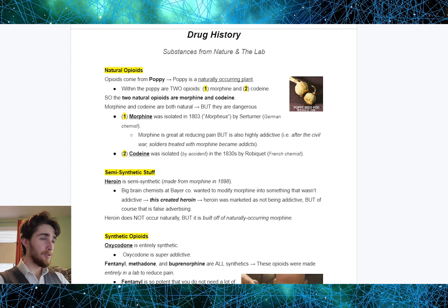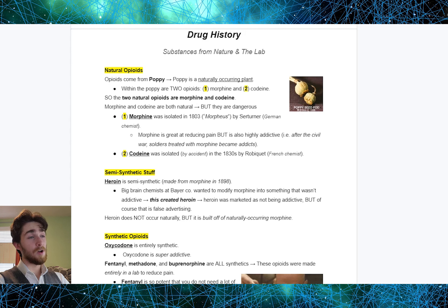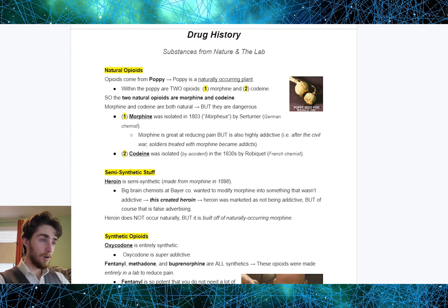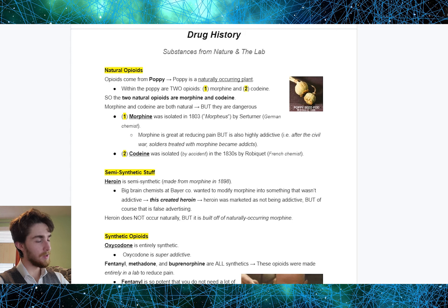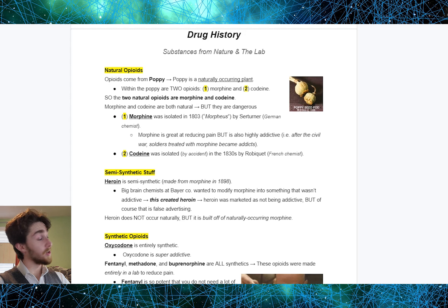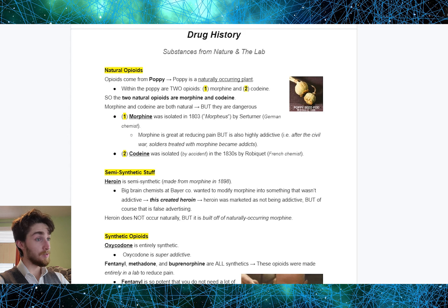Morphine was isolated in 1803 by a German chemist. Morphine is great at reducing pain, but it is also highly addictive. After the Civil War, people treated with morphine became addicted to it, because morphine, despite being natural, is highly addictive. Similar story for codeine — it was isolated by accident in the 1830s by a French chemist. Despite it being natural, codeine, much like morphine, is very addictive.